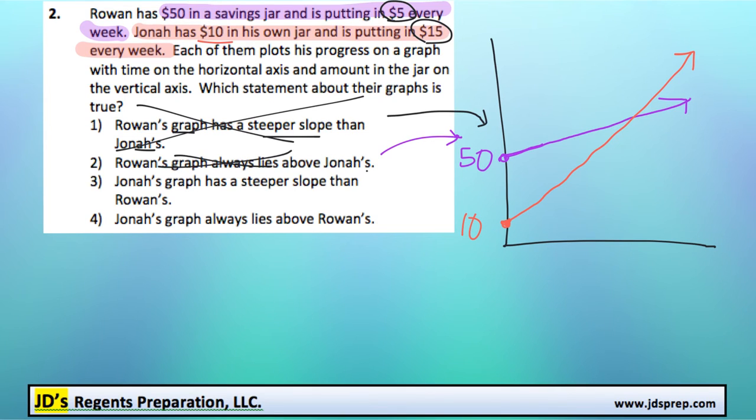The third one says that Jonah's graph has a steeper slope than Rowan's. That makes sense. That's definitely true because his slope is steeper because he's putting in more money every week. So that is the correct one.